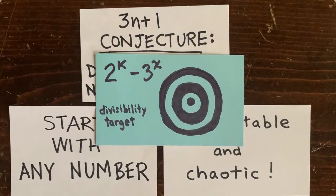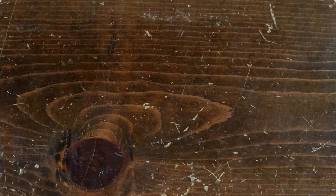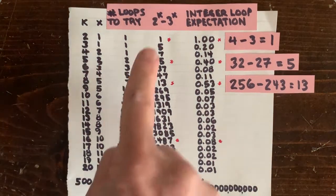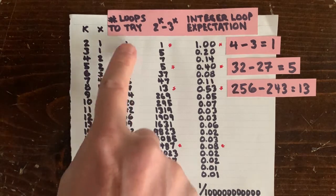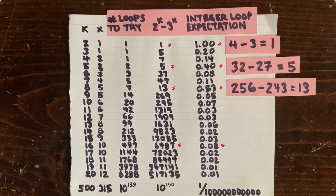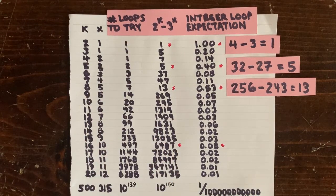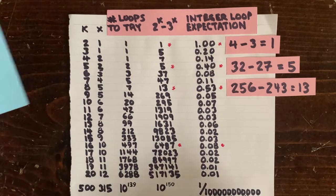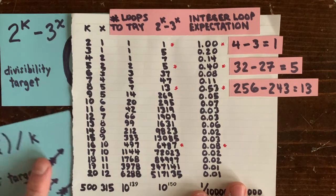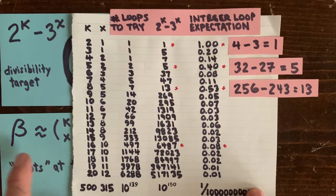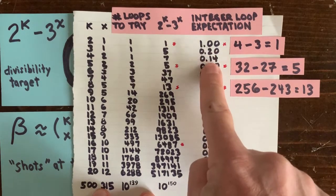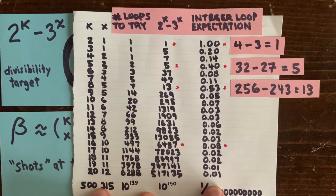Here's what happens when we consider different values of k up to 20. This column shows the divisibility target 2 to the k minus 3 to the x, which we want to be small. This column is the number of distinct loops of length k, which we want to be large. Every distinct loop is a shot at that target. If any shot creates a beta that's a multiple of 2 to the k minus 3 to the x, then we have a winner. If betas are random, then this last column shows the chance that we find an integer loop.